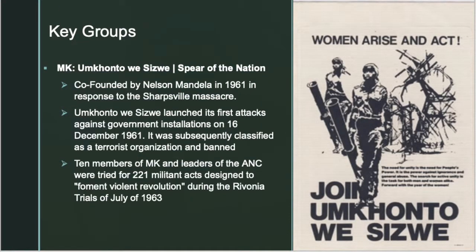The MK, Spear of the Nation, was co-founded by Nelson Mandela in 1961 in response to the Sharpeville massacre. Spear of the Nation launched its first attacks against government installations on the 16th of December 1961. It was subsequently classified as a terrorist organization and banned. Ten members of Spear of the Nation and leaders of the ANC were tried for 21 militant attacks designated to form a violent revolution during the Rivonia Trials of 1963.